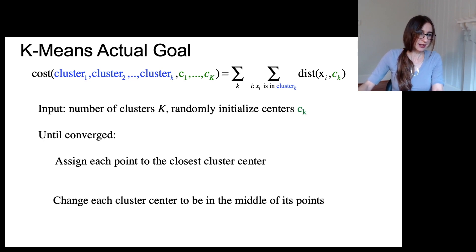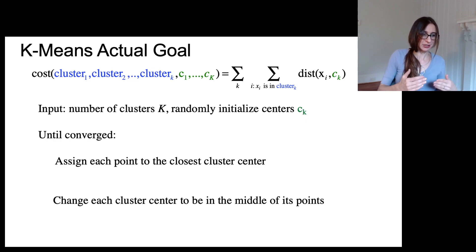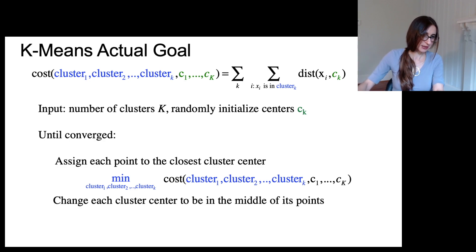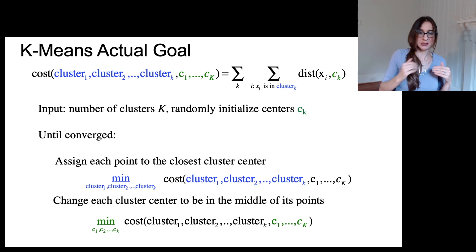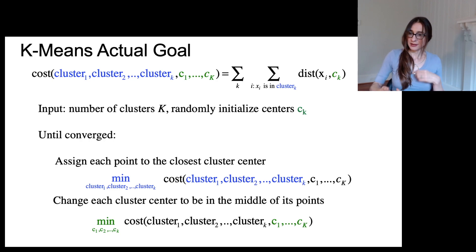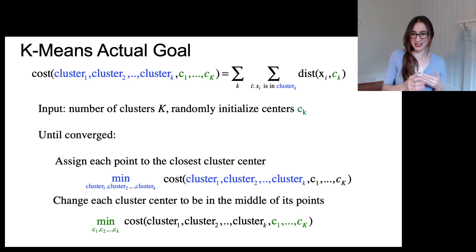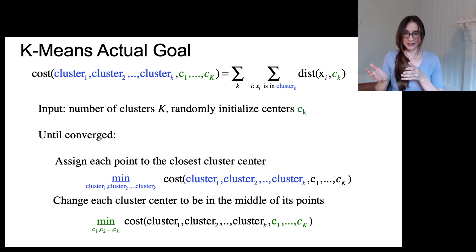Here's the algorithm again: until convergence, assign each point to the closest cluster center — which is minimizing the cost over cluster assignments with cluster centers fixed — then change each cluster center to be in the middle of its points, which minimizes the cost over the placement of those reference points. This alternating minimization scheme continues until convergence, and hopefully minimizes the overall cost. That's what k-means is actually doing.